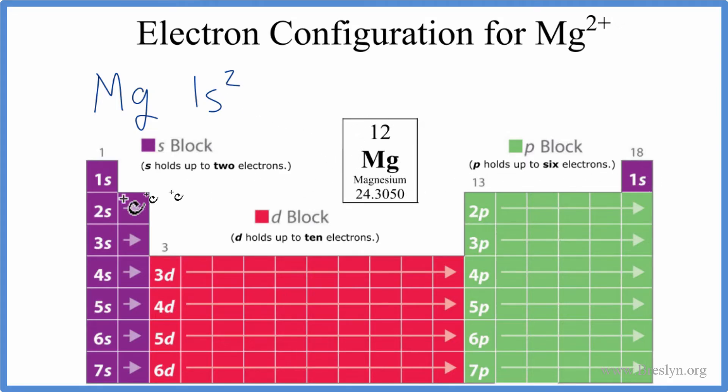We go from 1s to 2s. 2s, that can hold 2. So now we've used 4 electrons. From the 2s, we go to the 2p. P orbitals, they can hold up to 6. So we'll put 6 in here. We've used 10. So we only need 2 more electrons to use all 12 up for the magnesium.